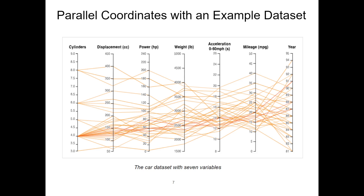Parallel coordinates with an example dataset. Let's look at the car dataset as a new example. The car dataset represents a collection of cars. In order to characterize the important attributes of each car, we record them in a spreadsheet. This car dataset shows seven attributes such as cylinders, displacement, power, weight, acceleration, mileage values, and production year of different car models. Each polyline on the parallel coordinates represents an individual car model.